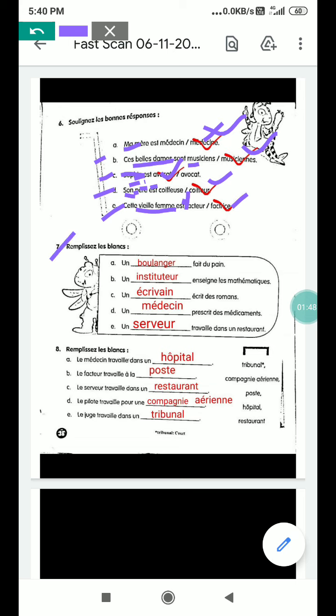You have to tell the professions. Like a boulanger fait du pain. Baker makes breads. Fait is to do and to make, faire. This is a faire verb. So a boulanger fait du pain, baker makes bread. Part B, instituteur enseigne les mathématiques. Instituteur is a teacher, teach mathematics. Professor, you can say this one.